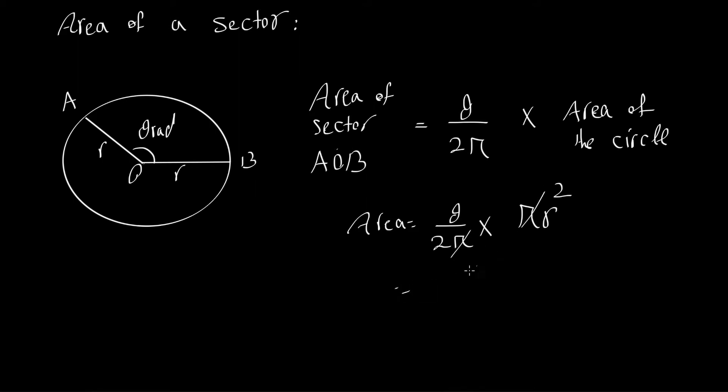You can cancel out the two π's, and it becomes 1/2 r²θ. This is the formula you will use to find the area of a sector.